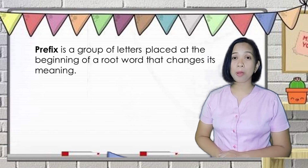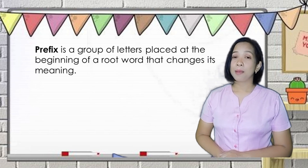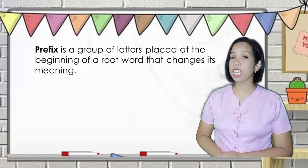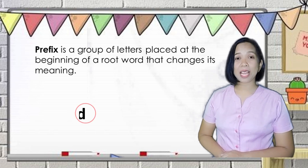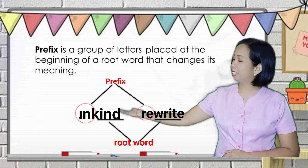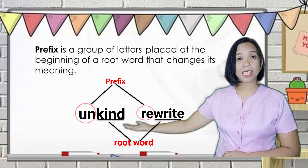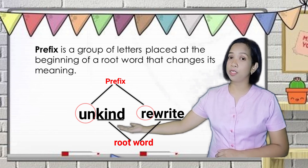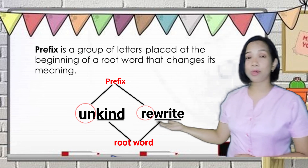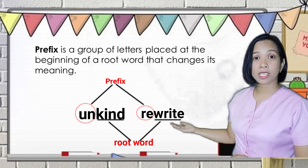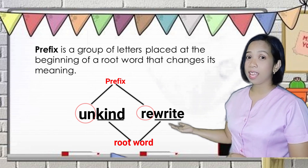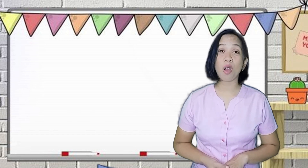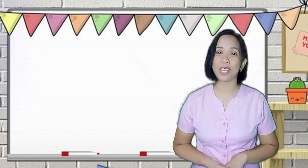Prefix is a group of letters placed at the beginning of a root word that changes its meaning. For example, unkind — the prefix is un and the root word is kind. Another one is rewrite — the prefix is re and the root word is write. Here are the most commonly used prefixes.